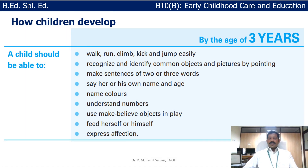Now let us look at the three-year-old. A three-year-old will walk, run, climb, kick, and jump easily. They will recognize and identify common objects and pictures by pointing, make sentences of two or three words, say their name and age, name colors, understand numbers, use make-believe objects in play, feed themselves, and express affection. These are the typical characteristics of a three-year-old child.